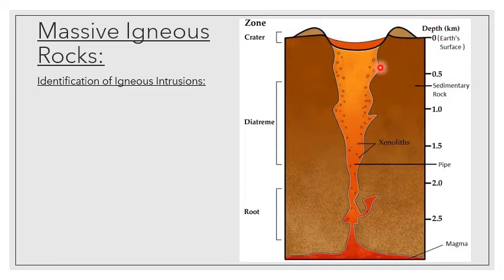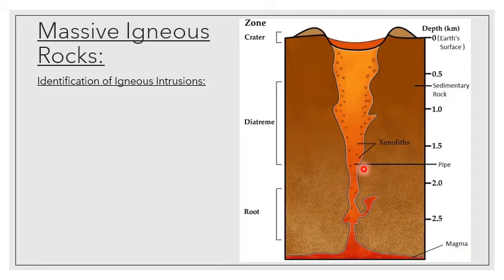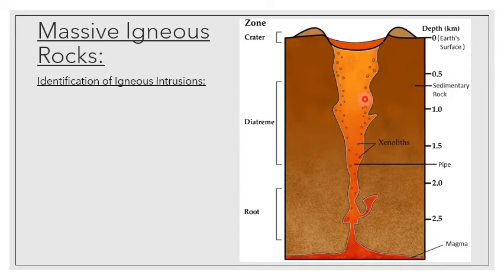Then we've got our diatreme, which is the middle part. And when we get deeper down to the narrow part, this is our root. A volcano does not always necessarily come from a dike — it could come from a sill or from a batholith directly. Any form of magma that can feed the volcanic pipe can form a volcano.